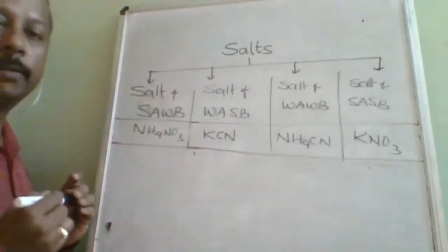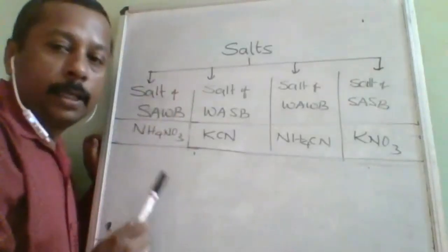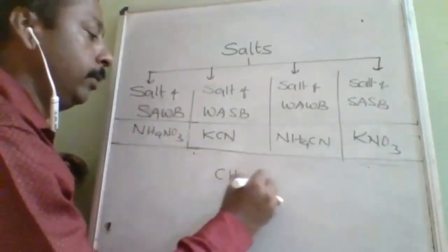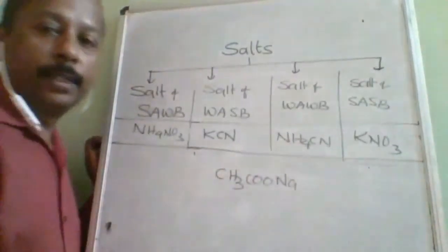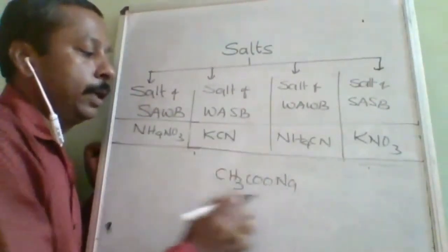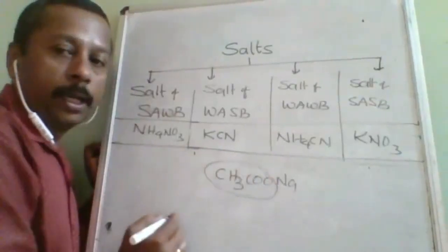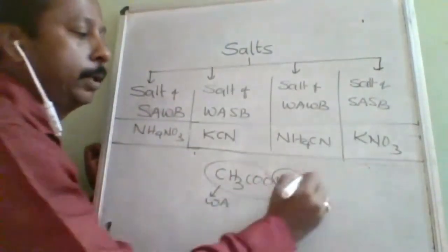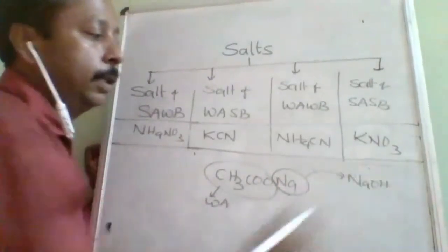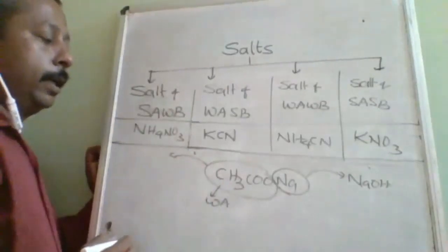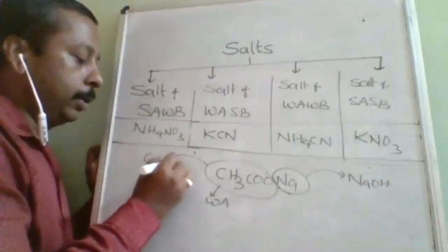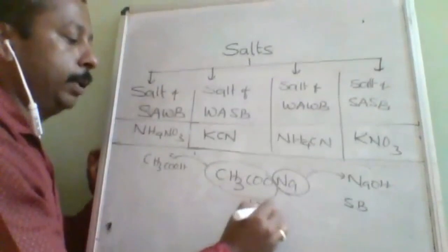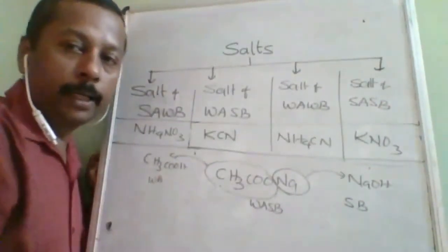The simple rule is: take the cation from the base and the anion from the acid. For example, CH₃COONa — the anion CH₃COO⁻ comes from acetic acid (a weak acid) and Na⁺ comes from NaOH (a strong base). So this salt belongs to the WA+SB category.